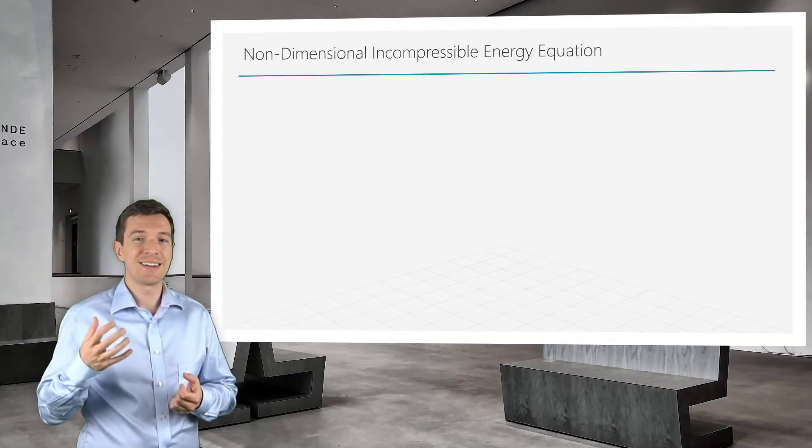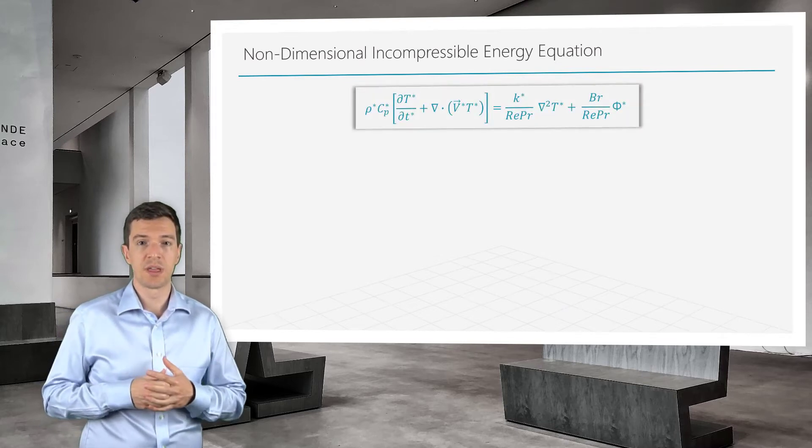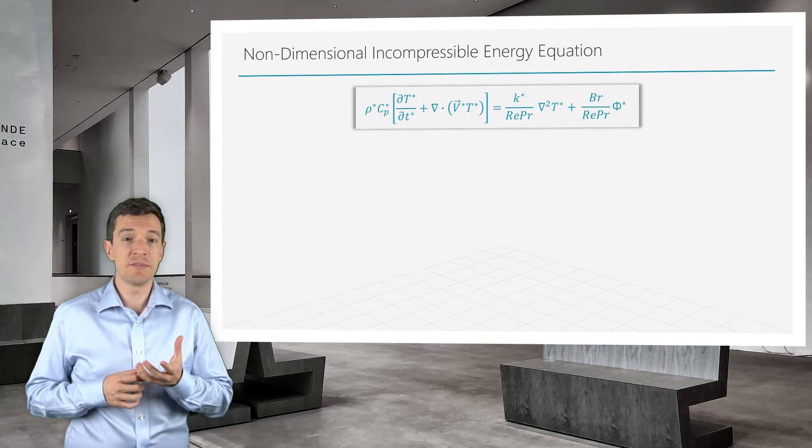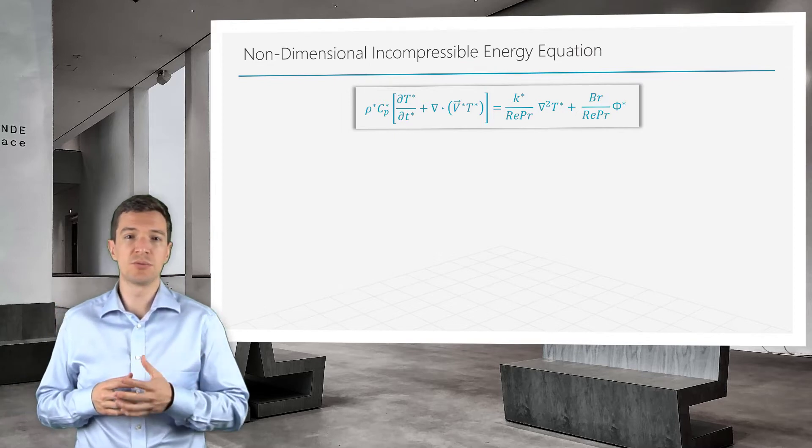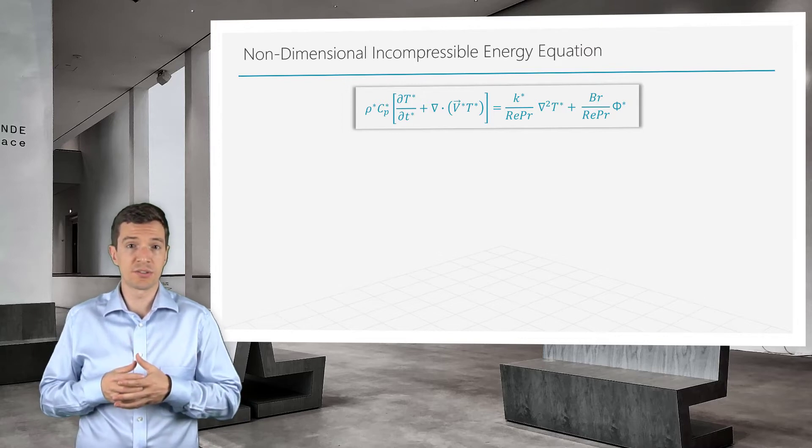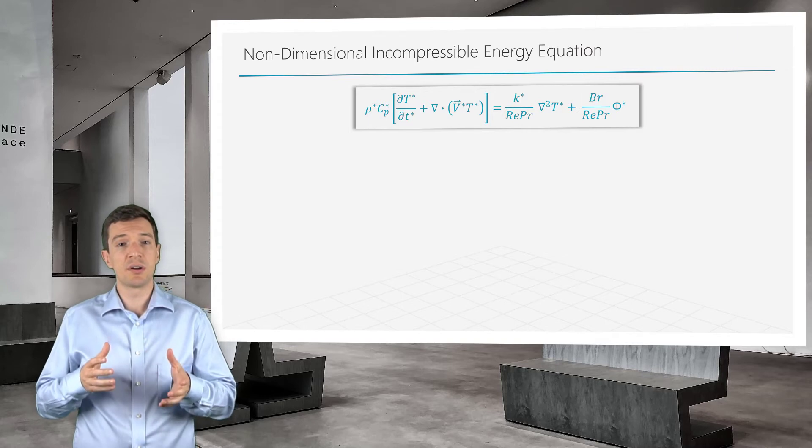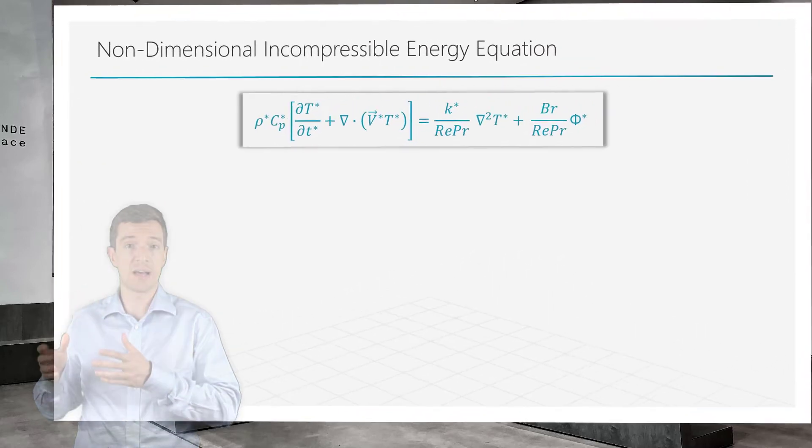Next, let's analyze the non-dimensional form of the energy equation. As you can see, even this equation looks similar to its dimensional counterpart. And as for the other equations, we have a bunch of non-dimensional numbers that appear on the right-hand side term.